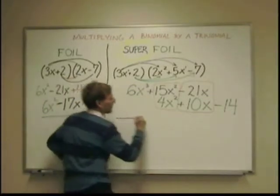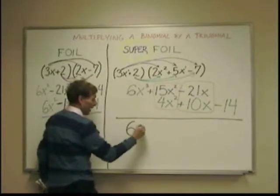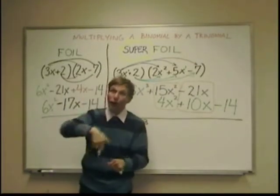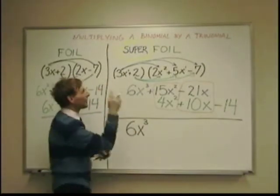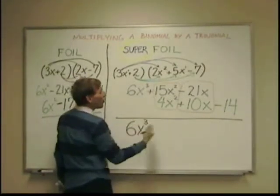So the 6x third, that's going to come down as part of my answer. There's nothing to combine that with. This is the addition or combination part of a foil. And in this case, it's more in detail than it was in the basic foil. I could combine the 15 and the 4. They're both positive.